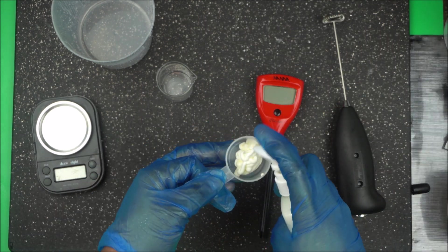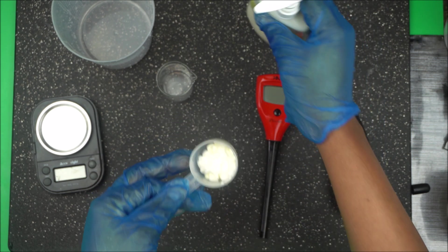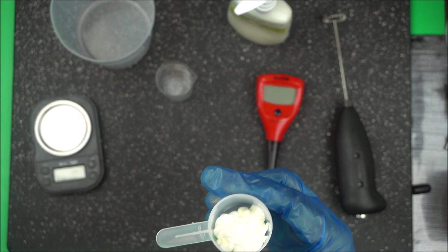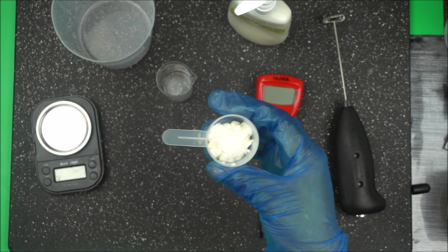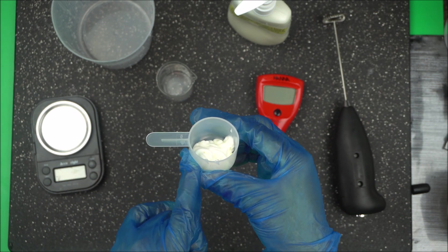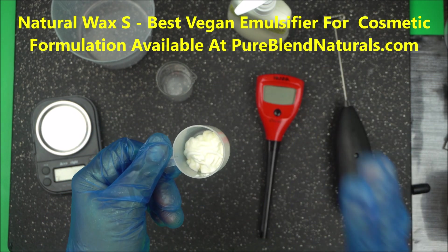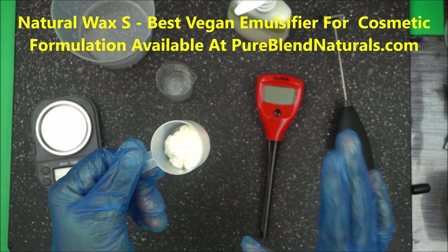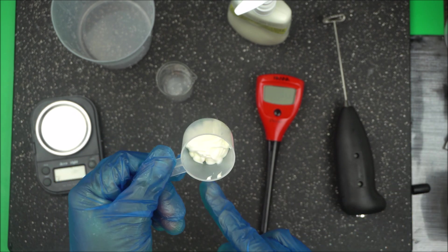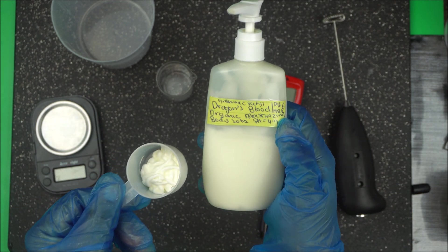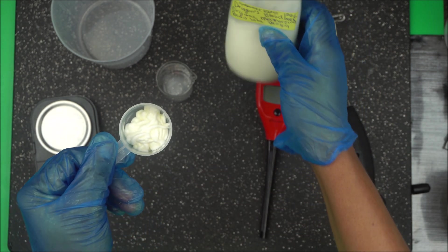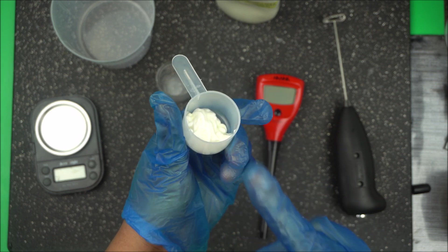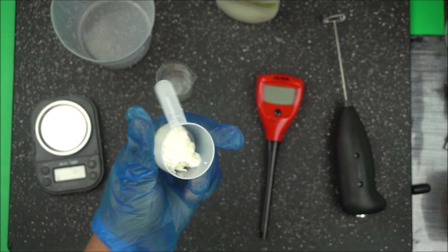I'm using a HANA pH meter, so make sure your pH meter is calibrated. Now I have a lotion here, a very good lotion. Keep in mind this lotion was made with a vegan emulsifier I told you about - Natural Wax S - a few weeks ago. It's a vegan emulsifier, the best natural vegan skin-friendly emulsifier. I used it to make this organic dragon blood lotion. It's very white because it's organic and you're not allowed to color it.